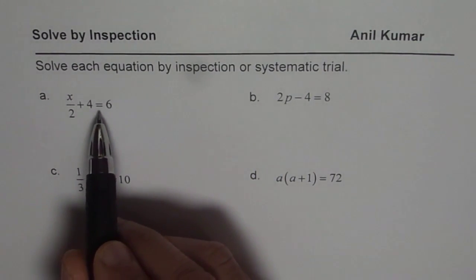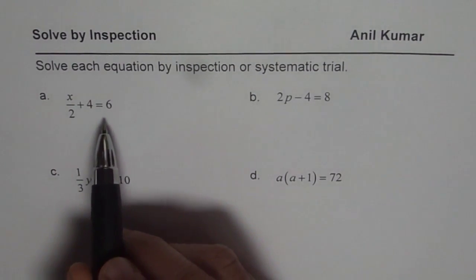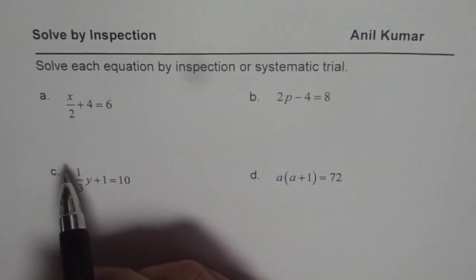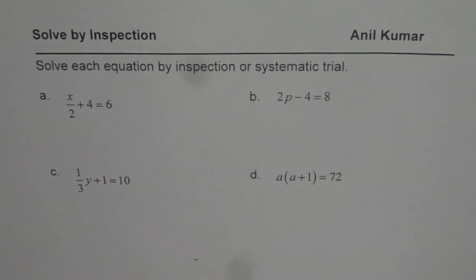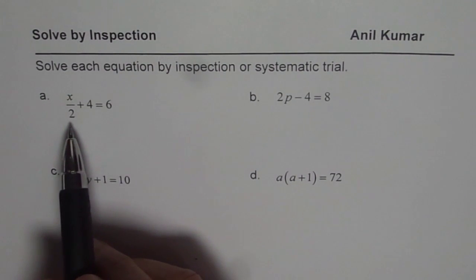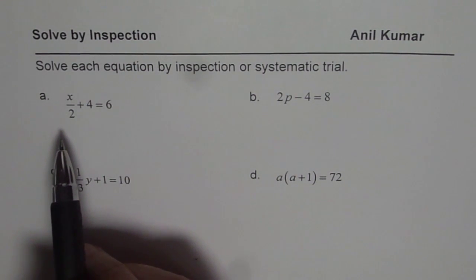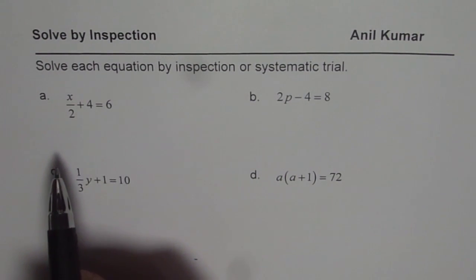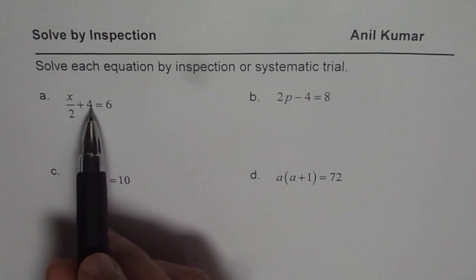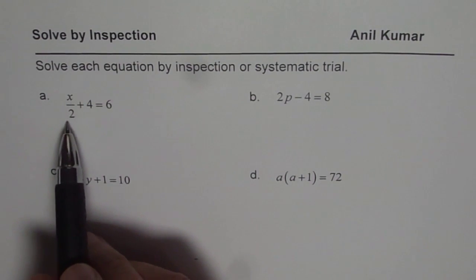x over 2 plus 4 equals to 6. One way to solve this is by inspection. But before even applying that method, what I feel more important about solving equations is to interpret or read them in proper way. For example, let us read this equation as half of a number. Don't say x. We know x is a variable. It could be any number. So we say half of a number plus 4 is 6. Or we can say 4 more than half a number is 6. Then what that number should be?